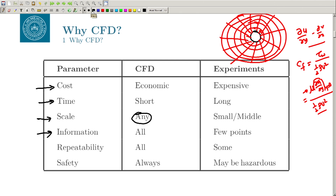The fifth point is repeatability. When you perform an experiment, the results depend on the temperature of the environment, the humidity, and the pressure — all these things affect the outcome. Whether you perform during the day or night, you may get slightly or very different results. Those problems are not there in CFD. You have an established numerical method, a code, and algorithms. If you are not changing any parameter, you are going to get the same result from your simulation.